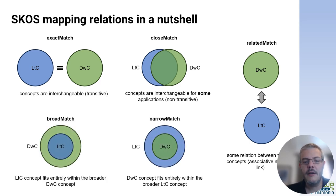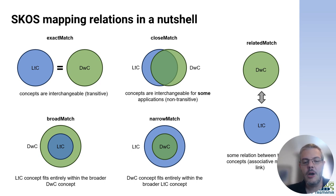Finally, there are the two hierarchical categories: broad match and narrow match. Broad match would mean that the Latimer Core concept fits entirely inside the Darwin Core concept but has a much more limited scope. Narrow match is the opposite — the more limited Darwin Core concept fits within the broader scope of the Latimer Core concept in that particular mapping.